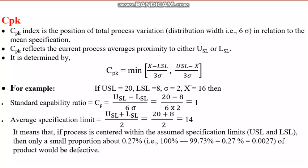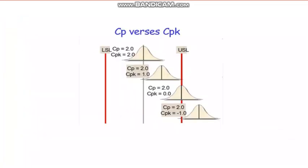CP is not concerned with whether the normal distribution bell curve is centered or shifted to one side. As long as it is within limits, CP says the process is capable. But CPK tells you how close the distribution center is to the left-hand side or right-hand side specification limit.